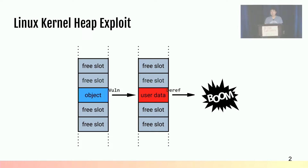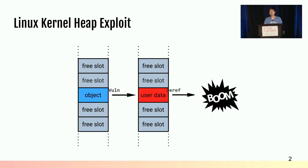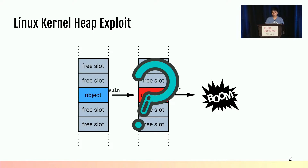A Linux kernel heap exploit usually involves a victim object. The attacker will use vulnerabilities to override the victim object with attacker-controlled data. When the kernel tries to dereference the controlled data as the victim object, it allows the attacker to break the security boundary and perform privilege escalation. However, in a typical kernel exploit, the object override does not succeed 100% of the time — in other words, the exploits are unreliable.